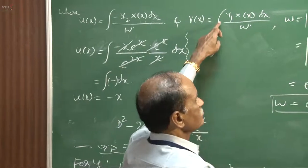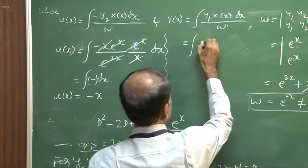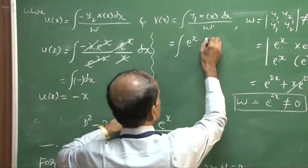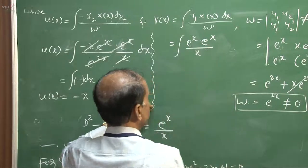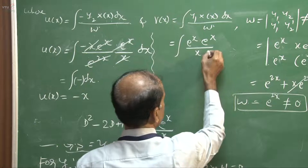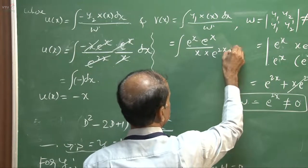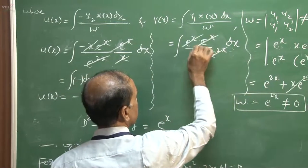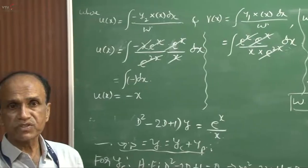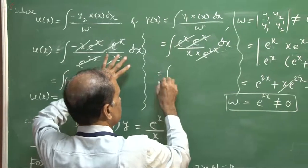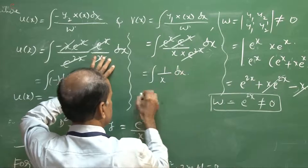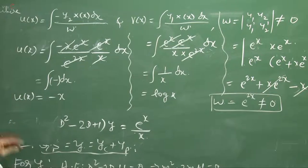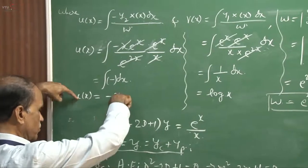For vx, we write the integration of y1 — that is e to the power x — multiplied by x of x, divided by the Wronskian e to the power 2x dx. The e to the power 2x in the denominator cancels with e to the power x terms, leaving the integration of 1 divided by x dx. This equals log x plus constant, so vx equals log x.